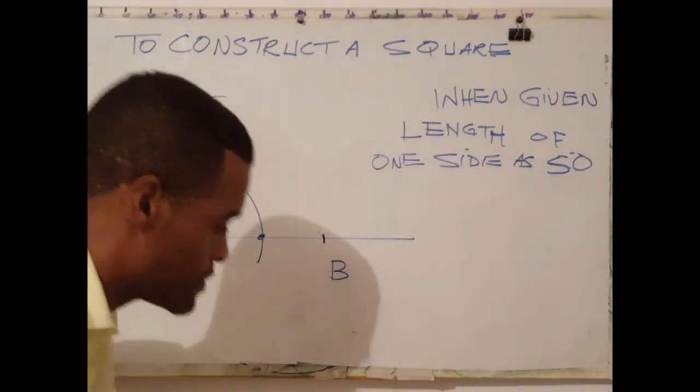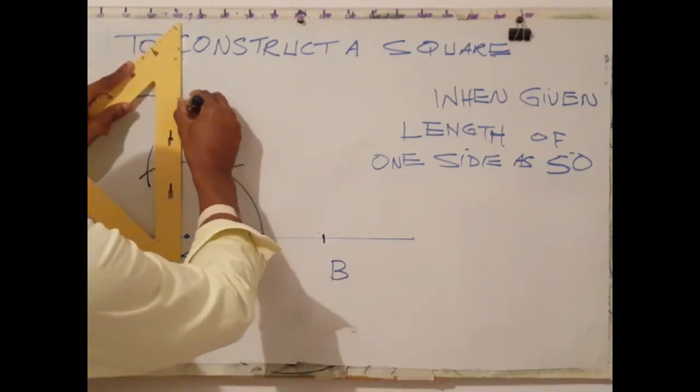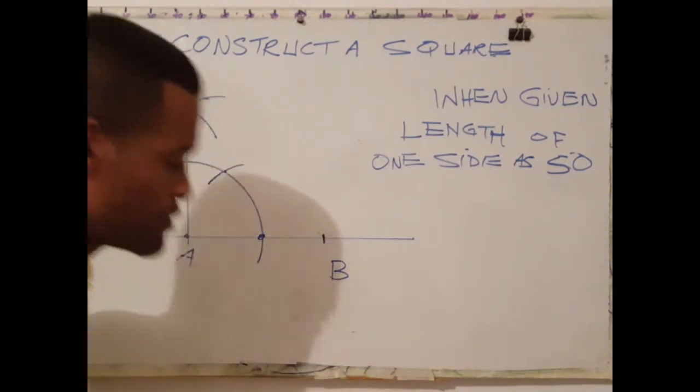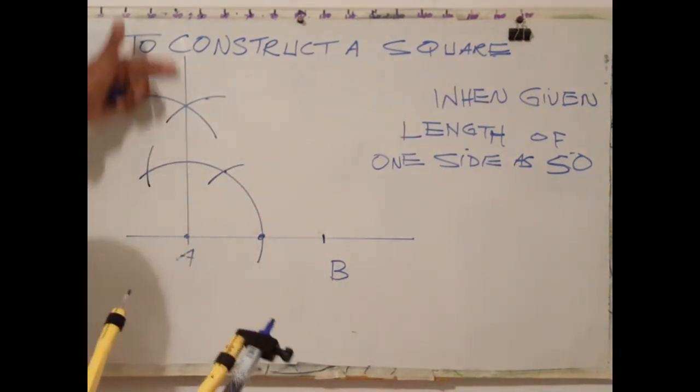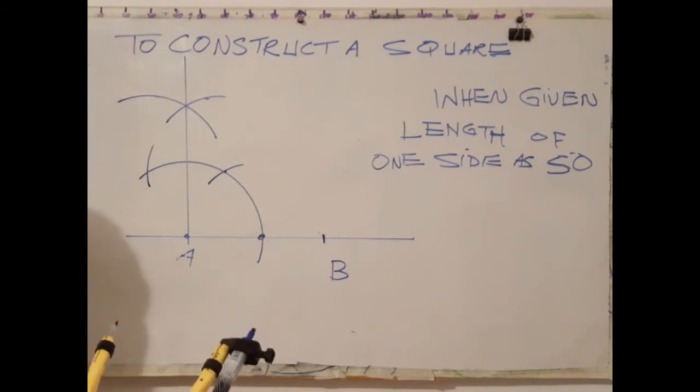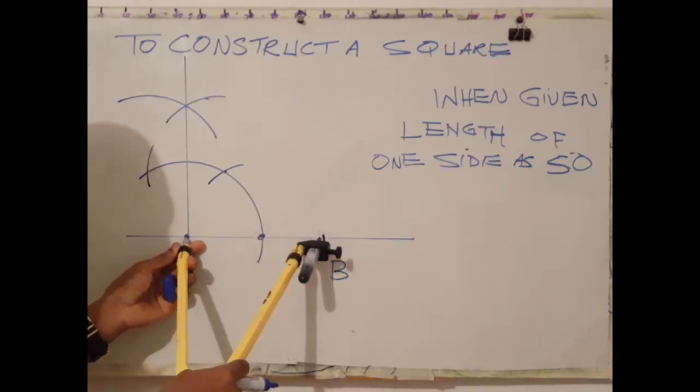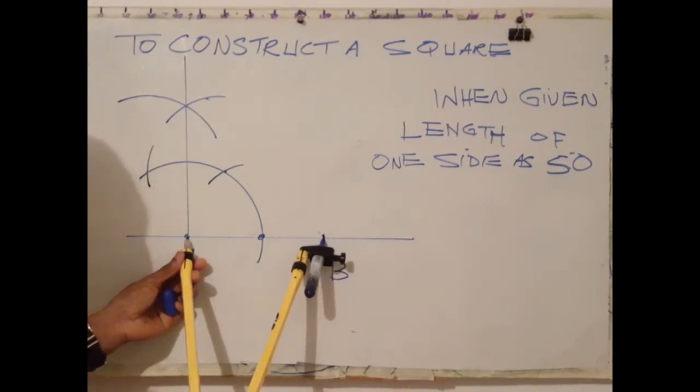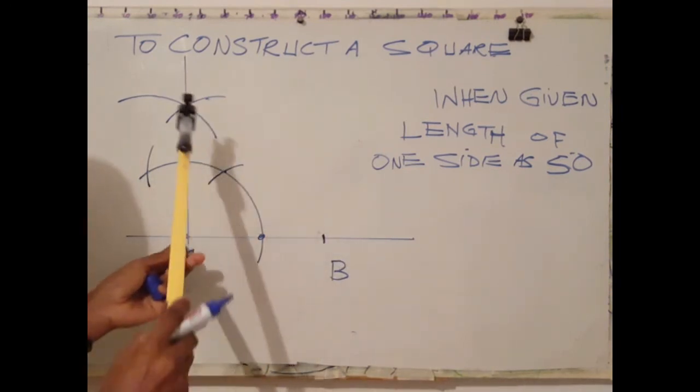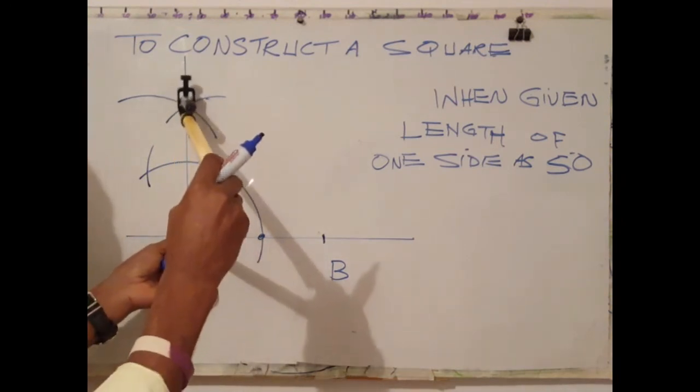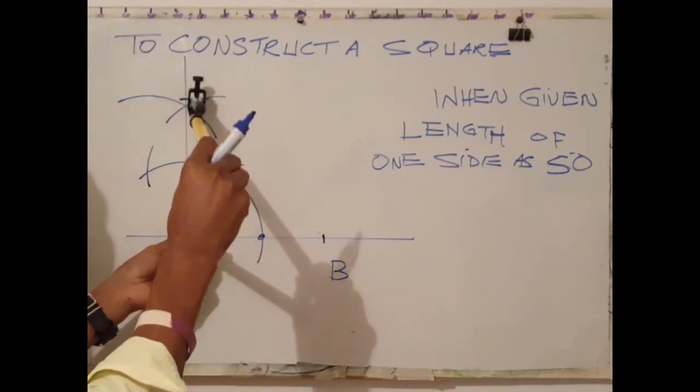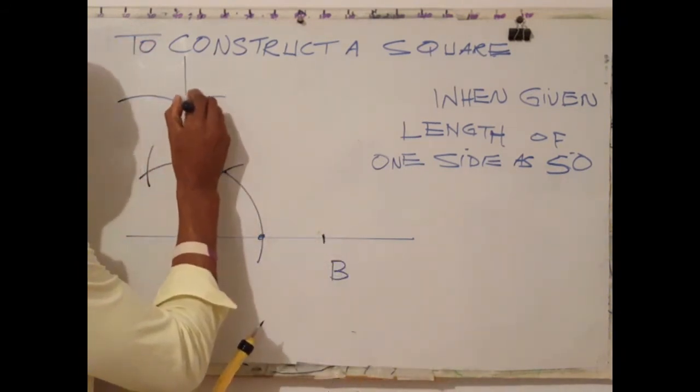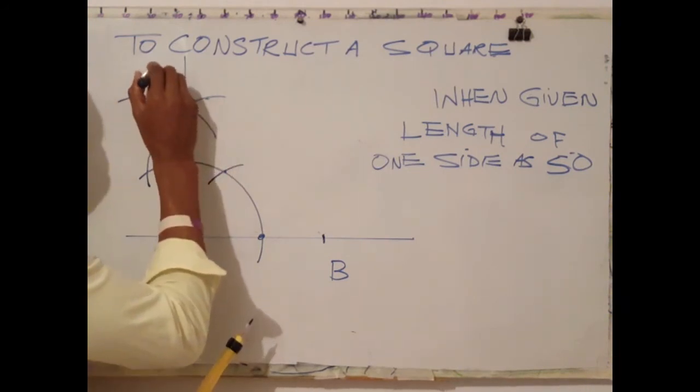Next step is to draw a line to the point where both arcs meet. Now that you have constructed our first perpendicular line, next, readjust your compass to the length of line AB, which is 50 millimeters. Using A as center, describe an arc on the vertical line. This should be your point D.